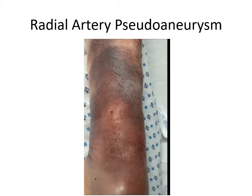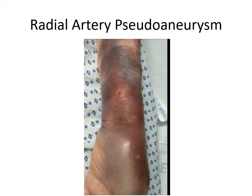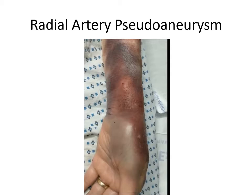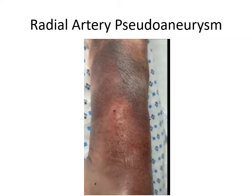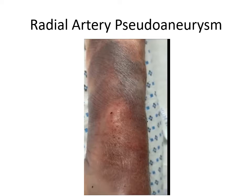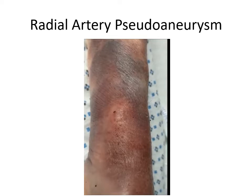Here we show a rare complication of the radial access site: a radial pseudoaneurysm. Note the relatively large pulsatile mass at the access site — the pseudoaneurysm. In this case, it had to be managed surgically, but at other times it will often thrombose spontaneously or with compression.